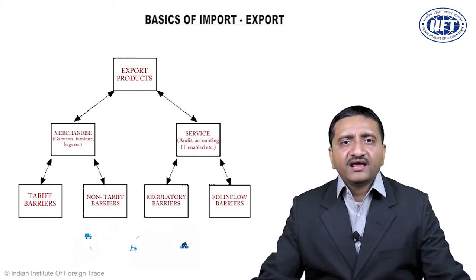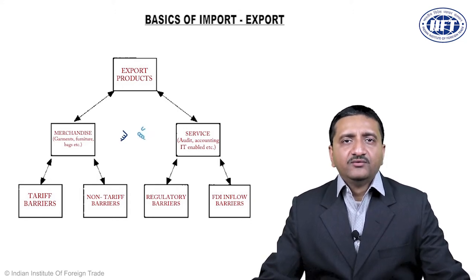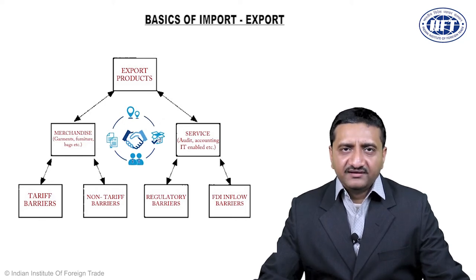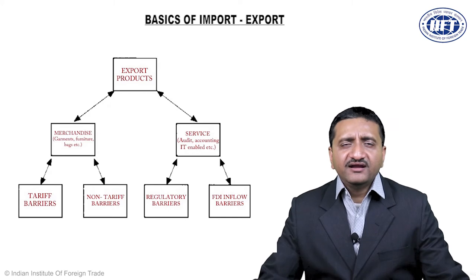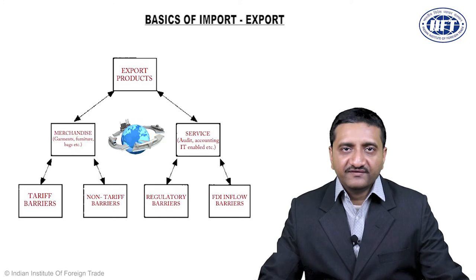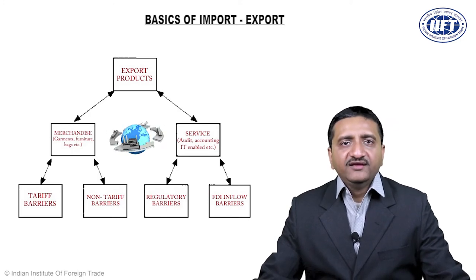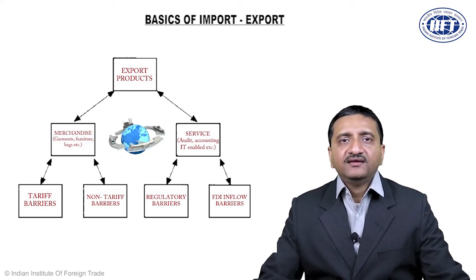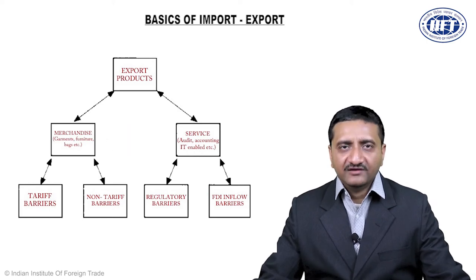On the first form of products, that is merchandise, there can be two types of barriers. The first can be a tariff barrier — when you are exporting and the price of your product is 100 rupees per unit, the importing country may impose a 5% tariff. One might check which dynamic countries have a lower tariff barrier.